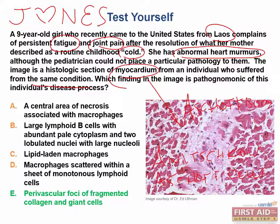What about the other answer choices? Answer A is not correct because granulomas are central areas of necrosis surrounded by macrophages, lymphocytes, and plasma cells. You see these in tuberculosis and sarcoidosis.